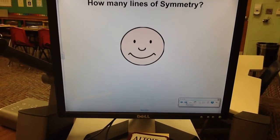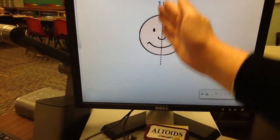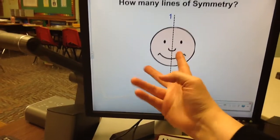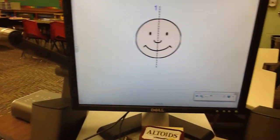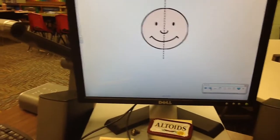How about the smiley face? How many lines of symmetry? Just the one, right down the middle. Because the eyes would match, the nose would match, and the mouth would match. If you had a line here, the mouth would be on top of the eyes, and that doesn't work.